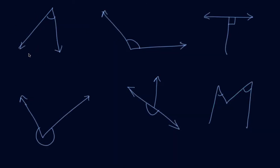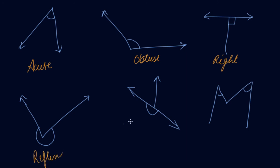Now we have to tell what type of angles these are. This angle is less than 90 degrees so it is an acute angle. This is greater than 90 degrees so it is an obtuse angle. This is a 90 degree angle so it is a right angle. This is greater than 180 degrees so it is a reflex angle. And this is a straight line with a 180 degree angle, so it is a straight angle.